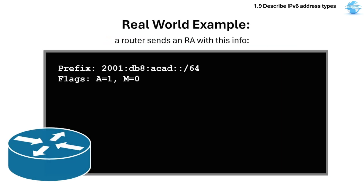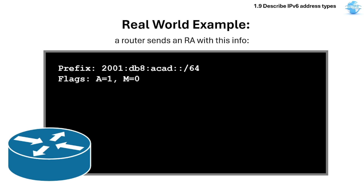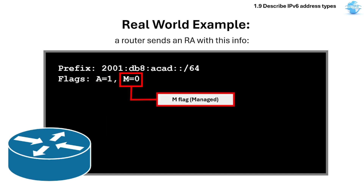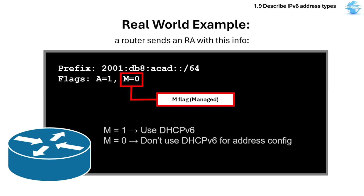Here's a real-world example. Imagine a router sending an RA with this info. If A is 1, the device uses SLAAC to generate its own IPv6 address. If A is 0, it means do not use SLAAC. You may also see the M flag, which stands for Managed. If M is 1, it means you can use DHCPv6. If M is 0, don't use DHCPv6 for address configuration.